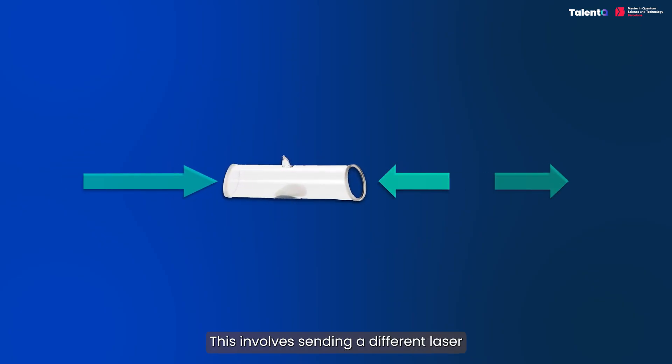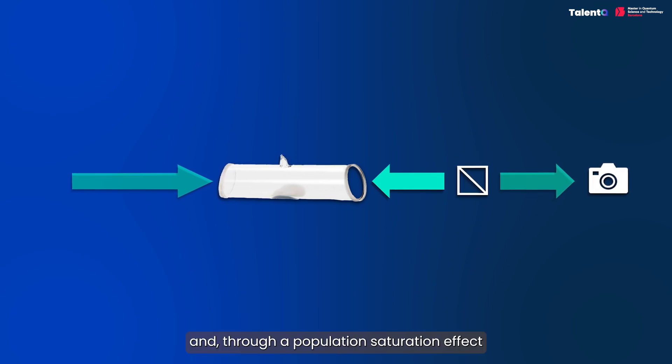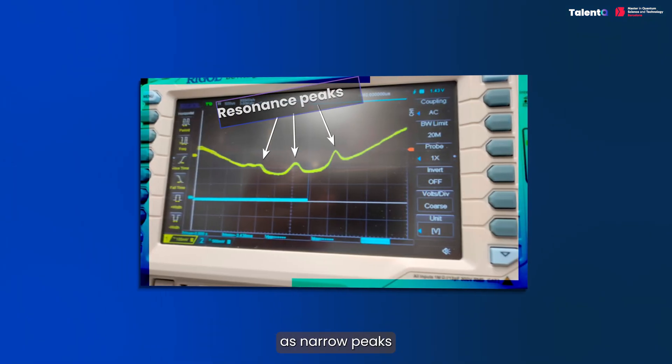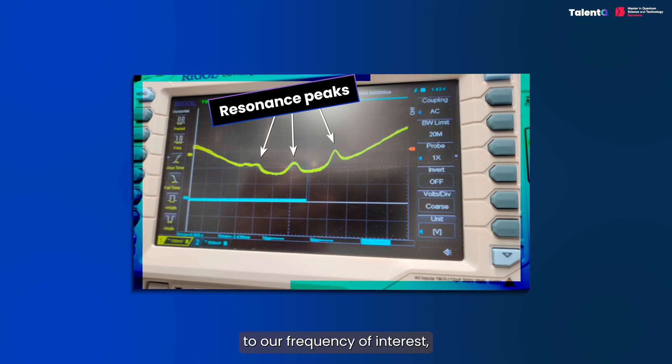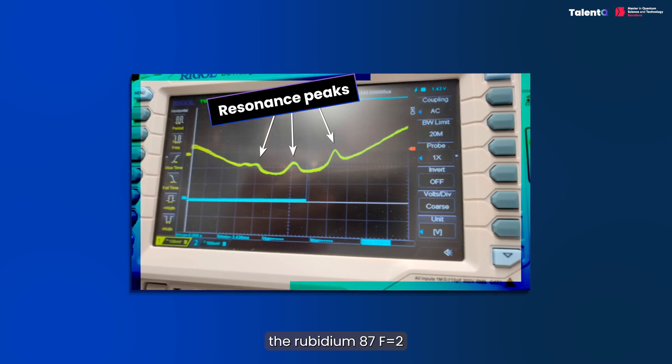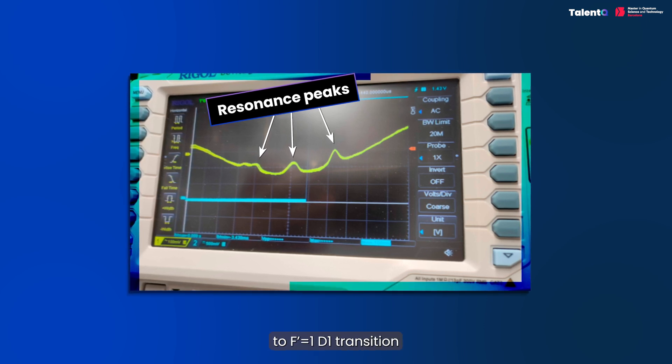This involves sending a different laser from the opposite direction to the probe beam and, through a population saturation effect, allows us to identify all transitions as narrow peaks. Using this technique, we are able to set the laser close to our frequency of interest, the Rubidium-87 f equals 2 to f' equals 1 d1 transition.